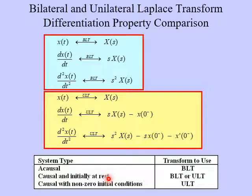If the system is causal and it's initially at rest, then we can either use the BLT or the ULT. We can use either one because we see if the system is at rest, these extra terms here go to zero, and the ULT is exactly equal to the BLT. Now, where we're going to mainly use the ULT here are causal systems with non-zero initial conditions. And in that case, the ULT is the only one that will work.